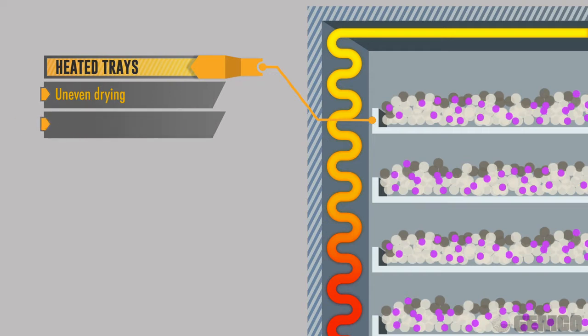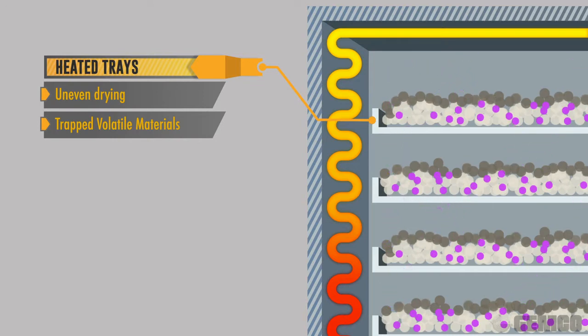The second problem is the volatile material may be trapped on the bottom layer particles, as a crust forms on the top layer of material. As these inner materials are insulated from the inert atmospheric drying process, they remain unstable.